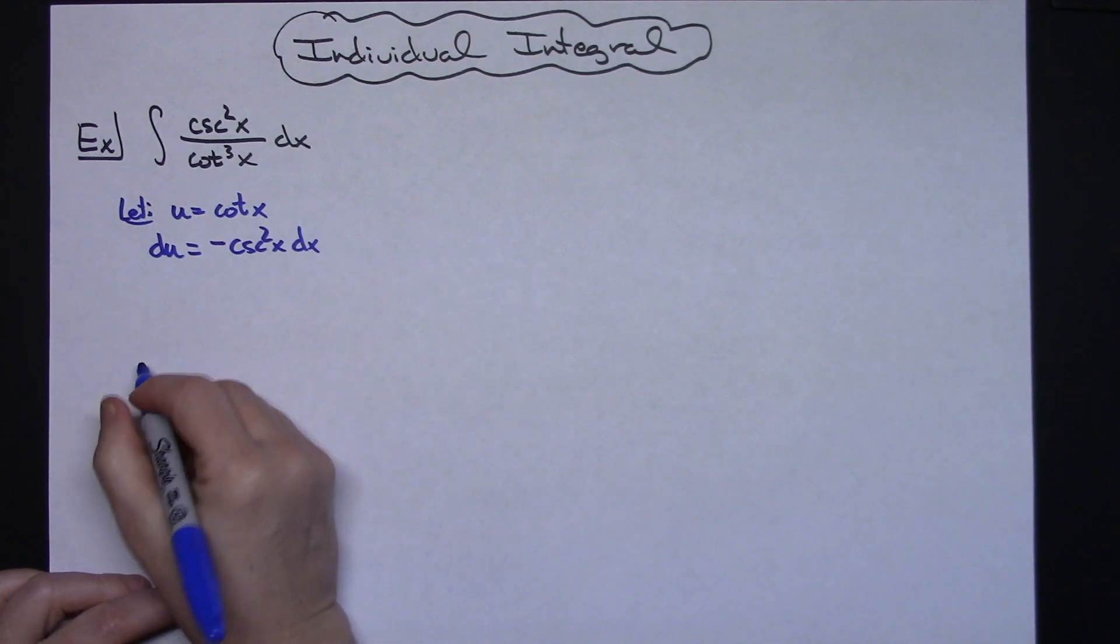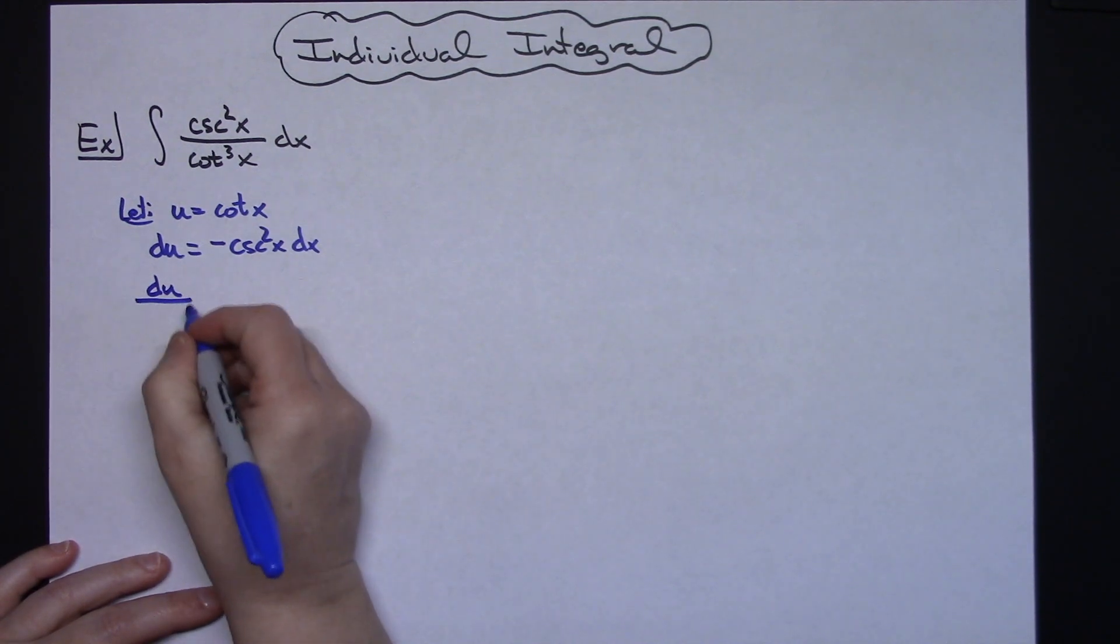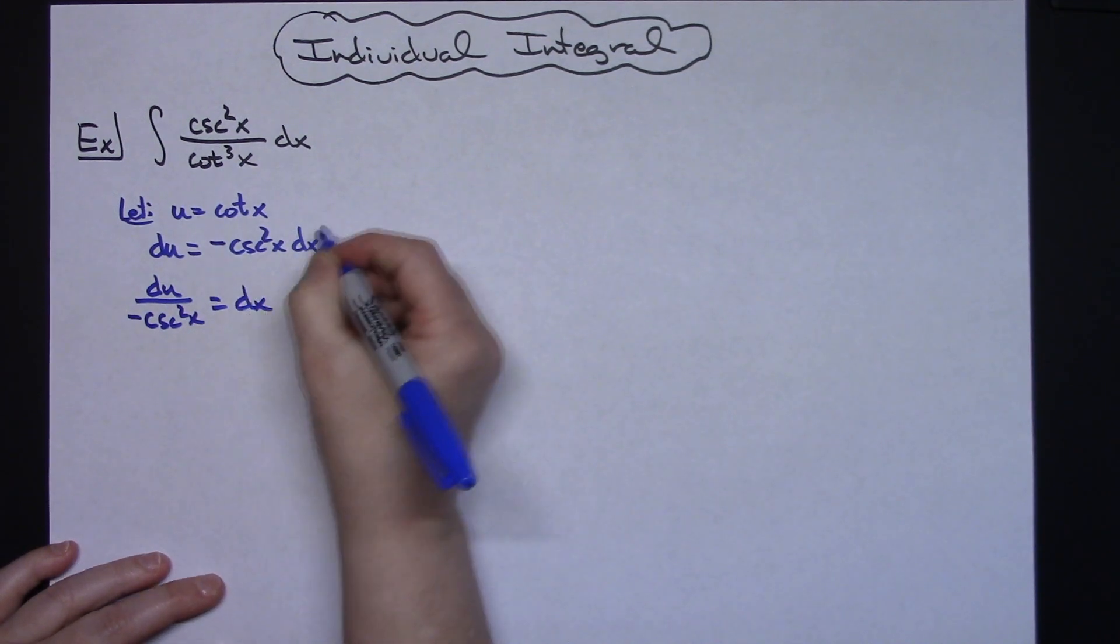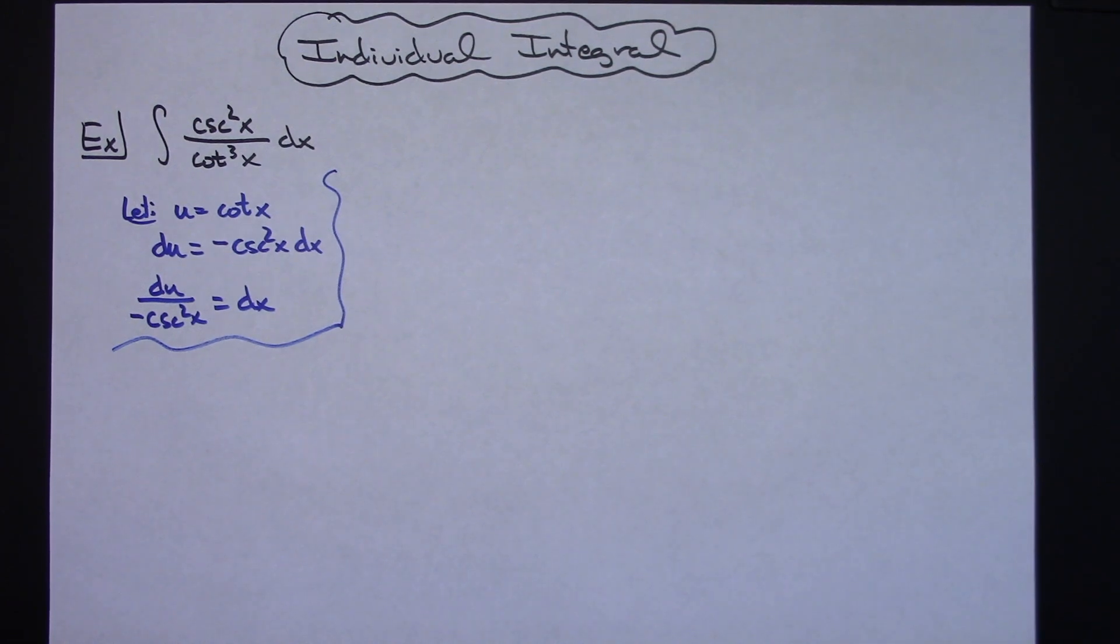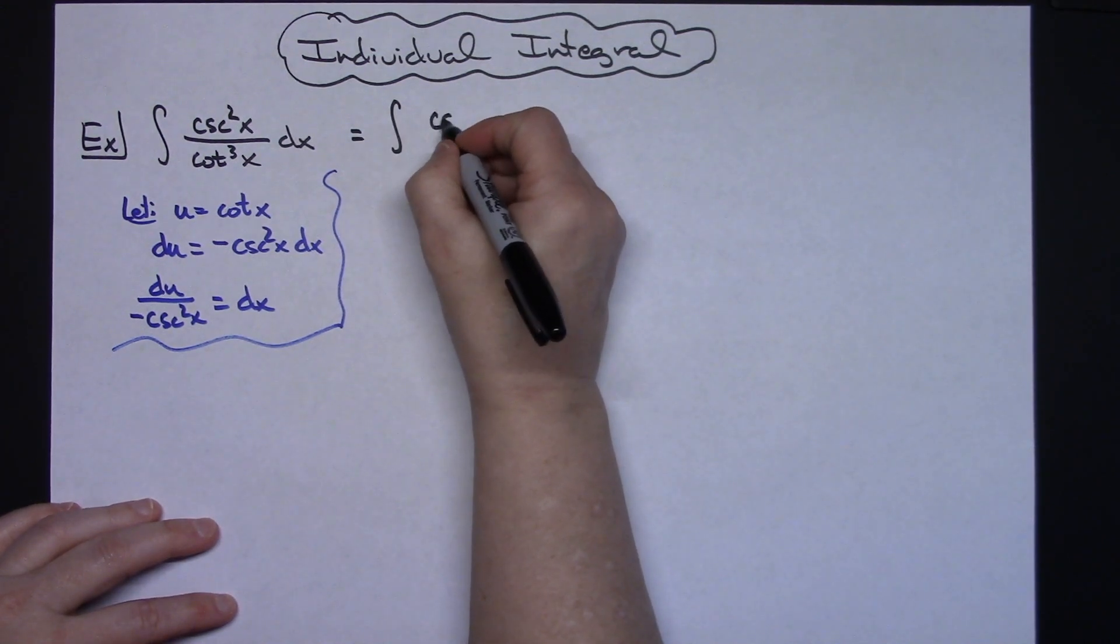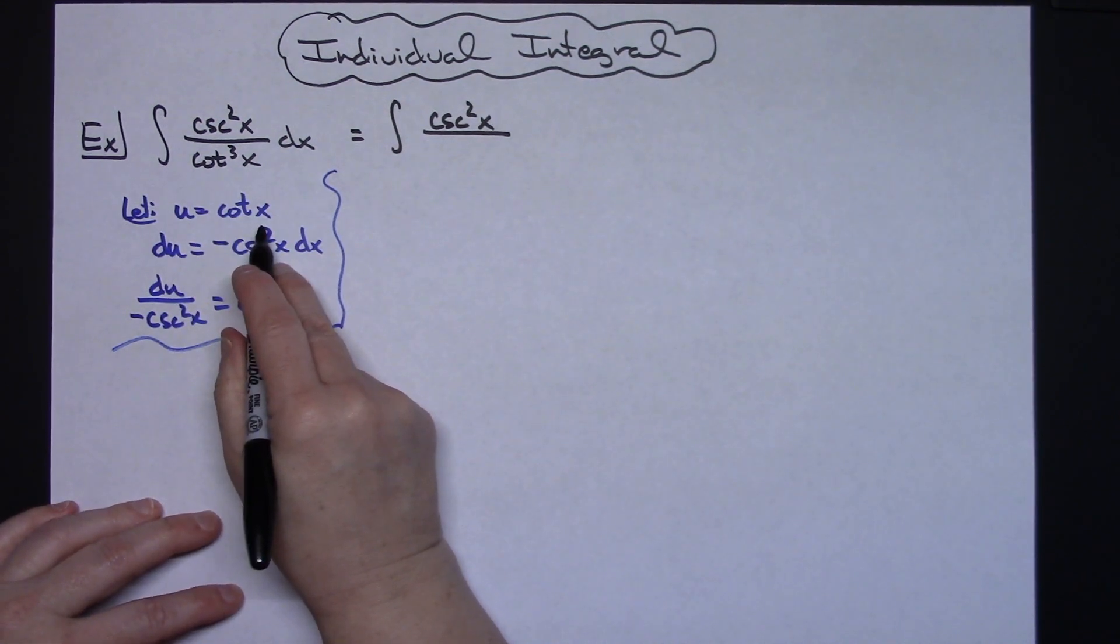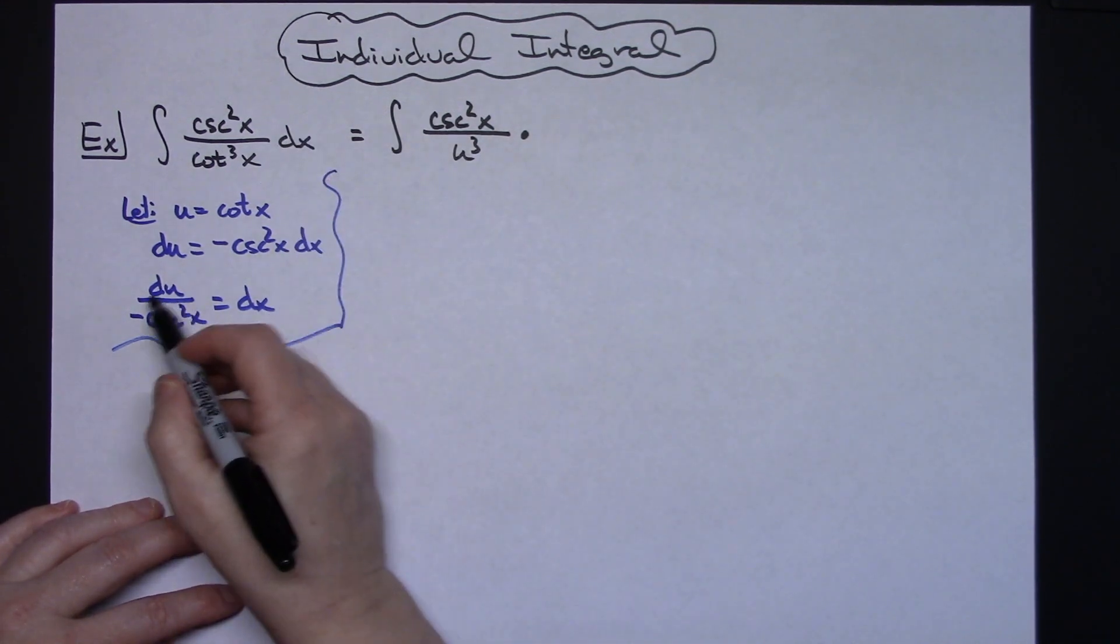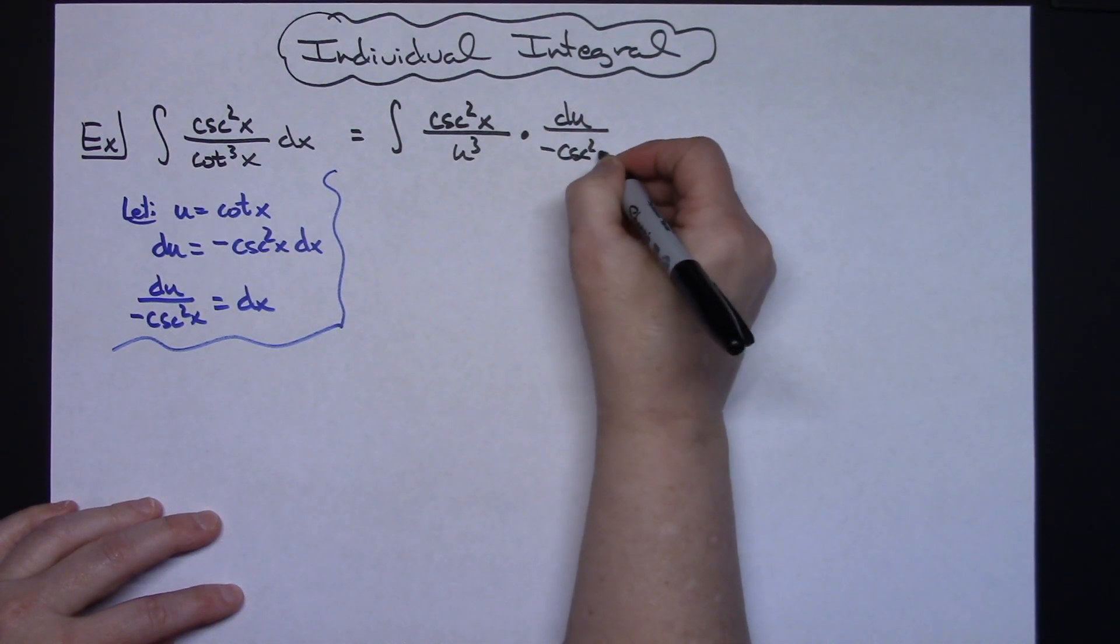I'm going to solve for dx, divide both sides by that negative cosecant squared, so then I'll have a du over a negative cosecant squared x is equal to dx. Now we'll come back up to that original integral and do some substitutions. We'll have the integral, we're going to leave that numerator alone so cosecant squared x. In the bottom since I let u be cotangent x then we'll have a u cubed on the bottom times replacing that dx we'll replace that with a du over the negative cosecant squared x.